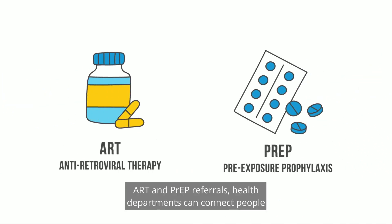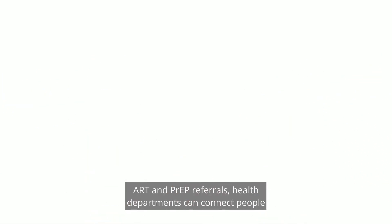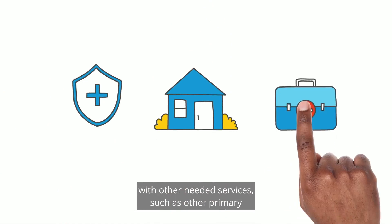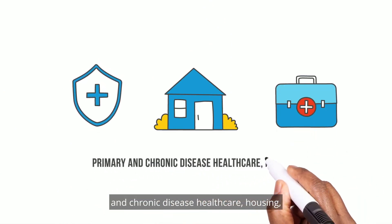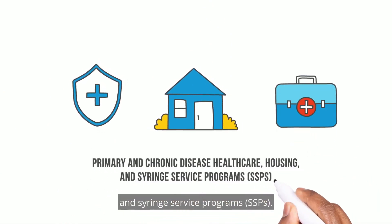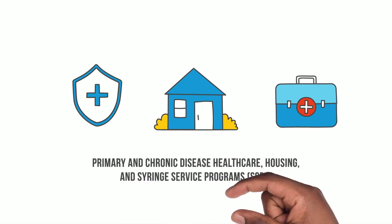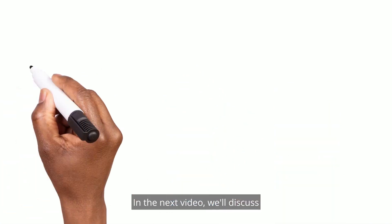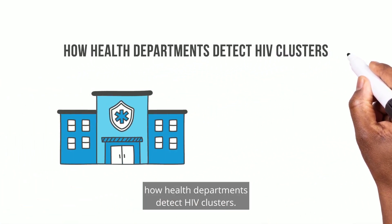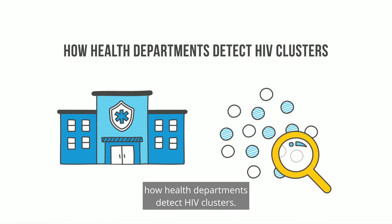Along with testing, ART, and PrEP referrals, health departments can connect people with other needed services, such as other primary and chronic disease healthcare, housing, and syringe service programs. In the next video, we'll discuss how health departments detect HIV clusters.